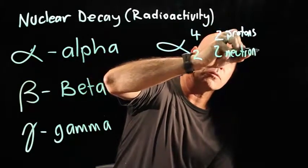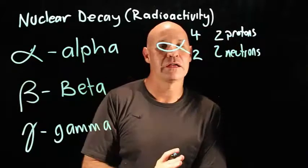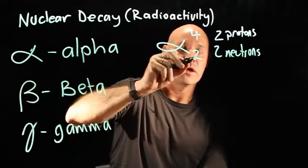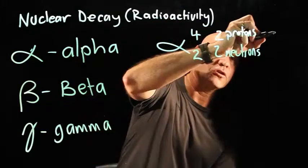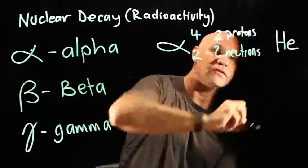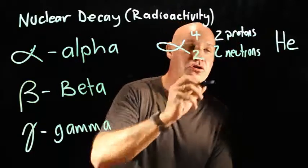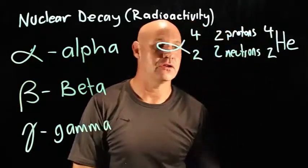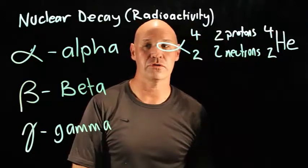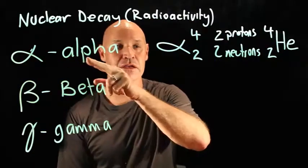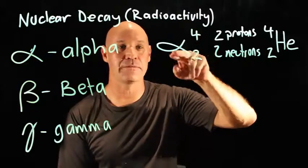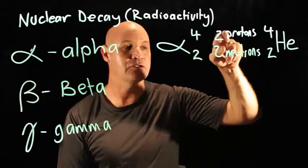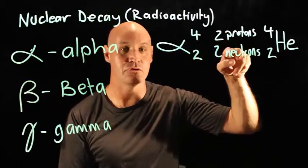So you might well identify four and two as being helium. And so we often say that what gets ejected is a helium nuclei, because helium has two protons and two neutrons. So when alpha decay occurs, what is ejected from the nucleus is an alpha particle, and that is two protons and two neutrons.